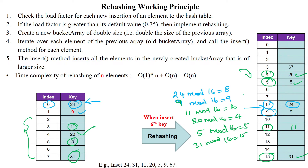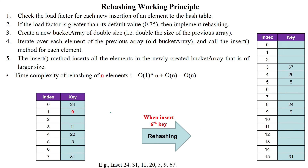We doubled the size of the hash table by calculating the load factor, then rearranged all elements into the newly created hash table. To rehash n elements, we need O(1) time for accessing and storing each element, plus O(n) time for moving n elements into the new hash table. Together this gives O(2n), and since the coefficient does not create any effect, the time complexity is O(n). Based on the load factor, we can increase the size and rehash the given elements.